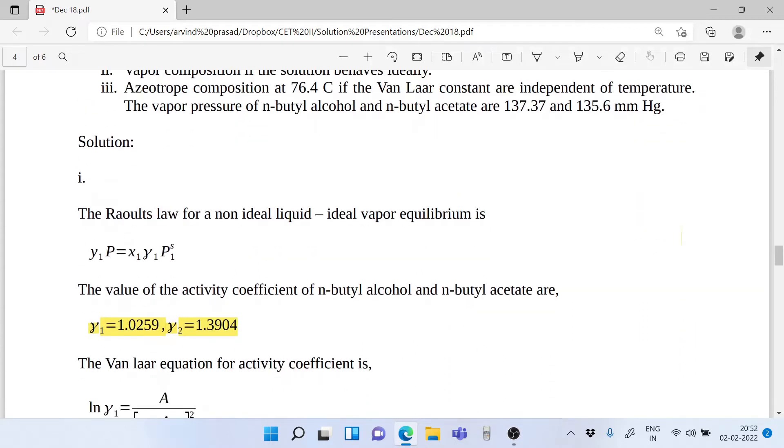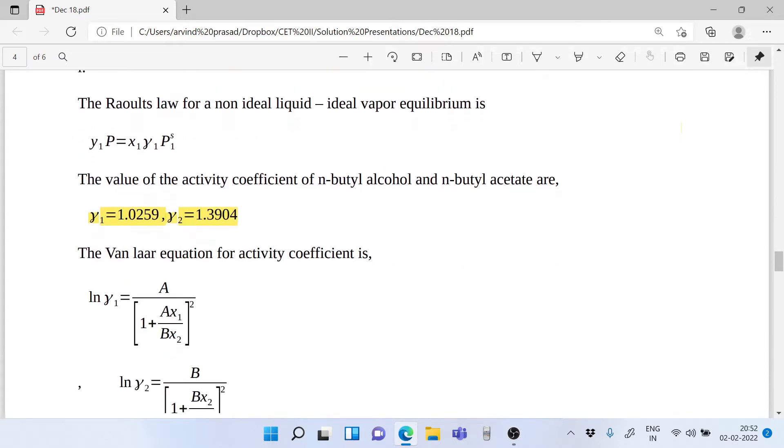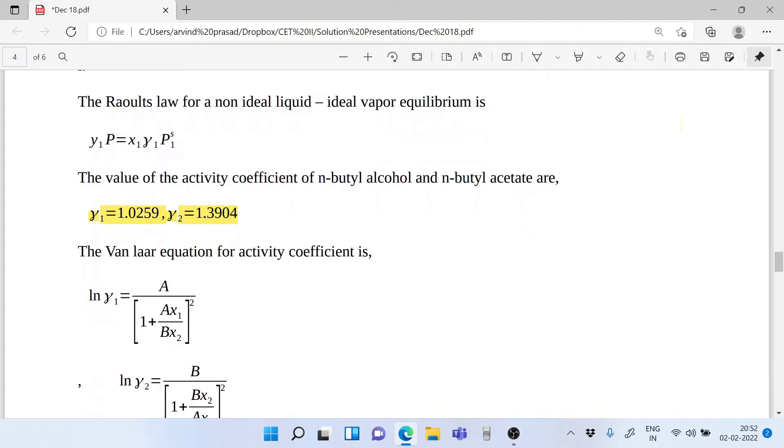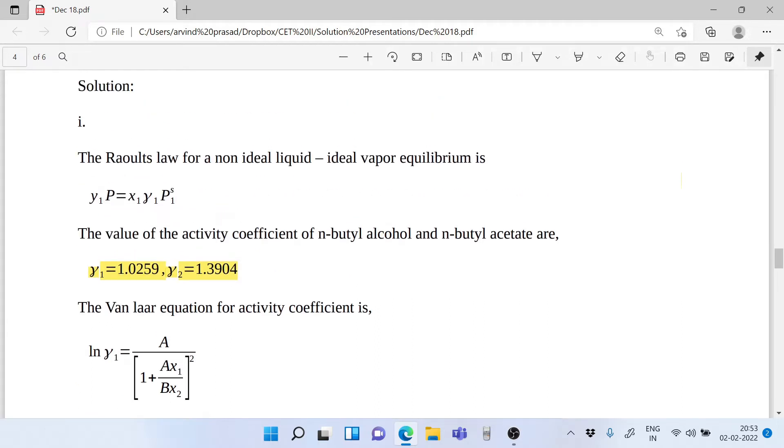Now how do we solve this? First we need to find out the Van Laar's constants. The Raoult's law for a non-ideal liquid and an ideal vapor equilibrium is y₁P = x₁γ₁P₁ˢ. The value of activity coefficients of n-butyl alcohol and n-butyl acetate are calculated. We know that y₁ = x₁, so we have γ₁ = P/P₁ˢ.